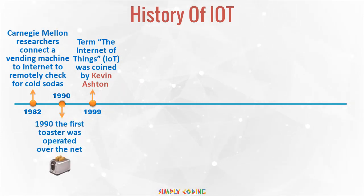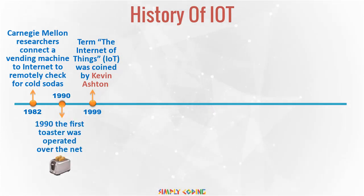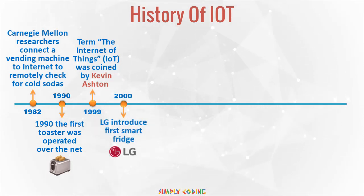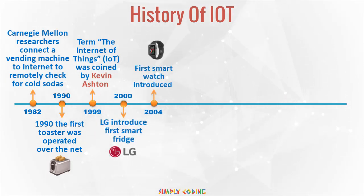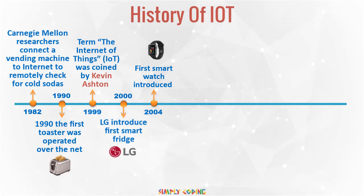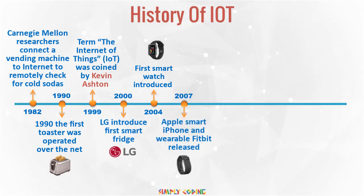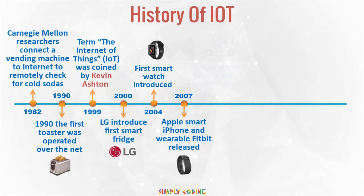In 1990, the first toaster was operated over the net. In 2000, LG introduced the first smart fridge. In 2004, smart watch was introduced and in 2007, smart iPhone and wearable Fitbit were released.